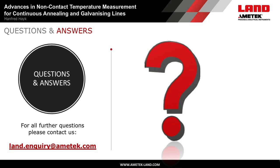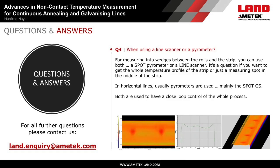Question: When do you use a line scanner versus a pyrometer? For measuring into wedges between the rolls and the strip, you can use both — a spot pyrometer or a line scanner. It is a question of whether you want the whole temperature profile of the strip or just a measuring spot in the middle of the strip. In horizontal lines, usually pyrometers are used, mainly the SpotGS. Both are used to have a closed-loop control for the whole process.